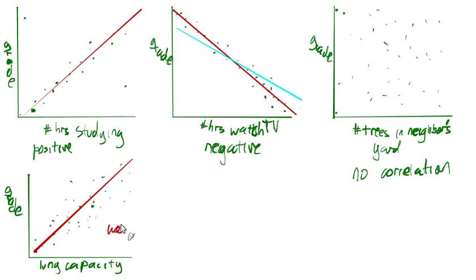So this is weak. This is stronger. This is pretty strong, too. If we wanted to draw another example of some weak correlation that was negative, it just means that those dots aren't very close together.